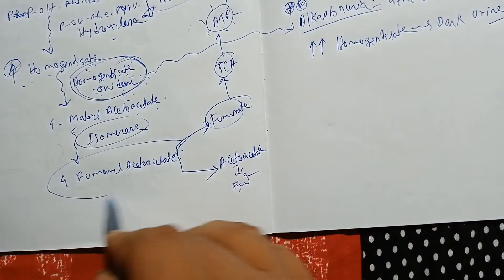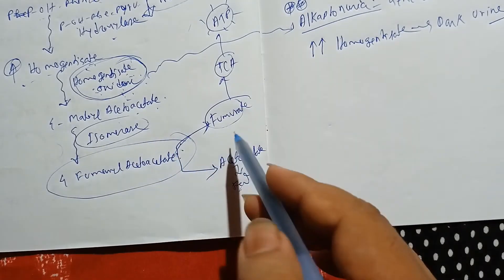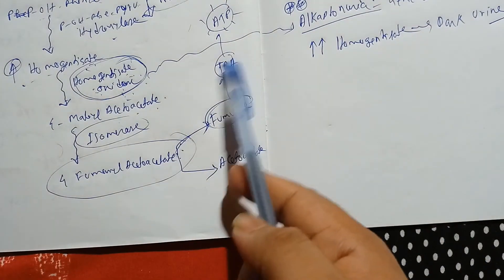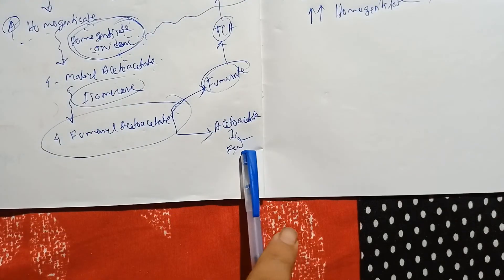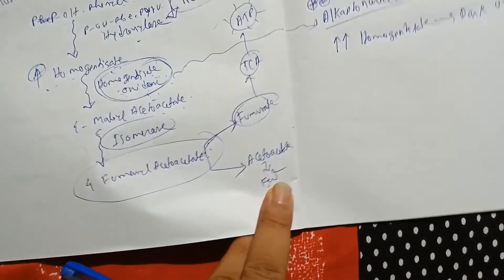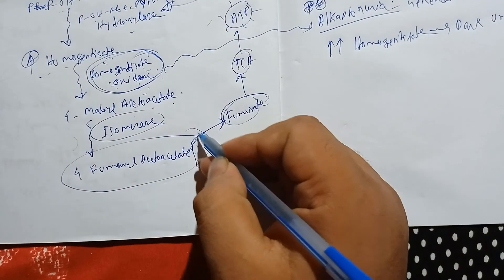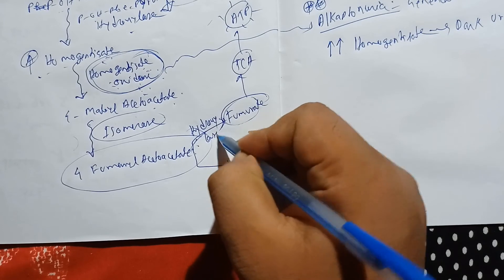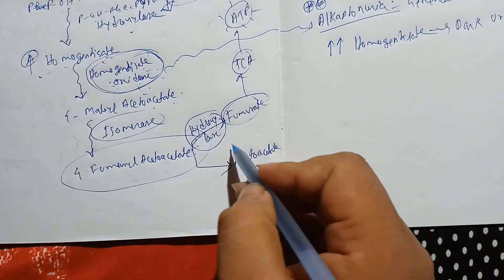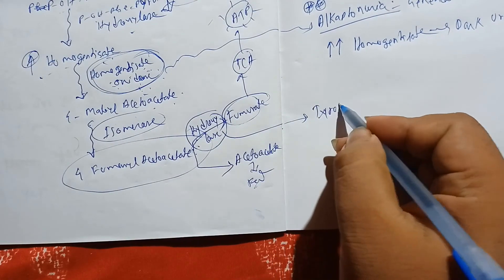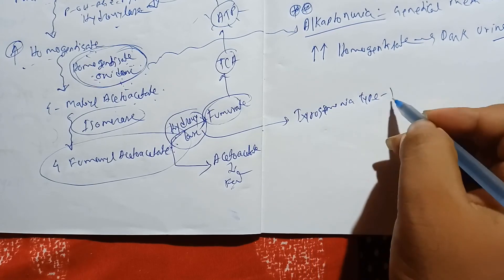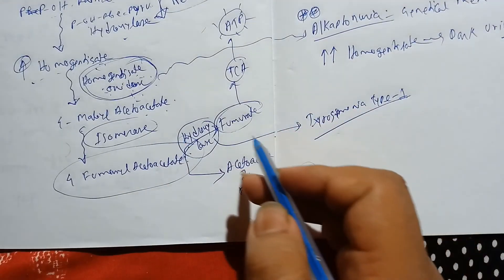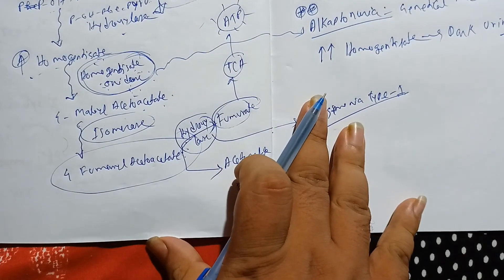The last product is fumaric acid, from which we can go to fumarate, then to the TCA cycle, and ultimately to the electron transfer system to produce ATP. We can also go another way — converting into fat. The enzyme is called fumarylacetoacetate hydroxylase, and whenever there is deficiency of this enzyme, it leads to tyrosinemia type one.